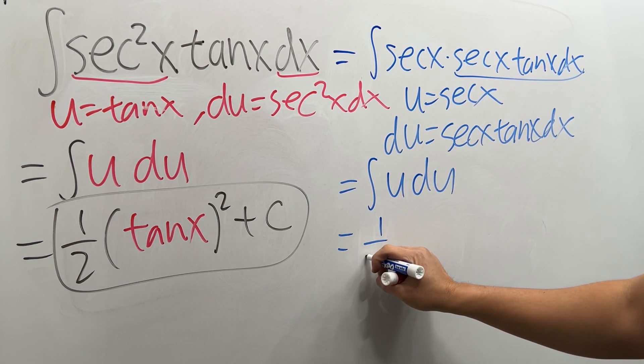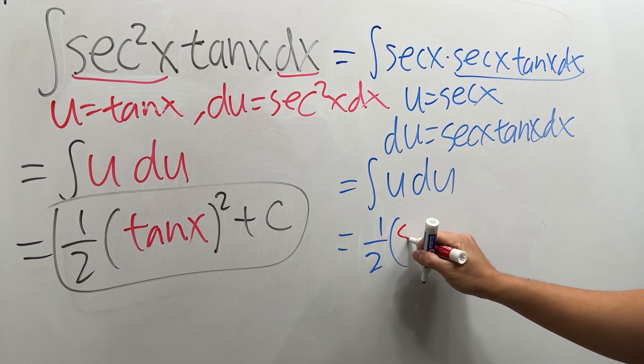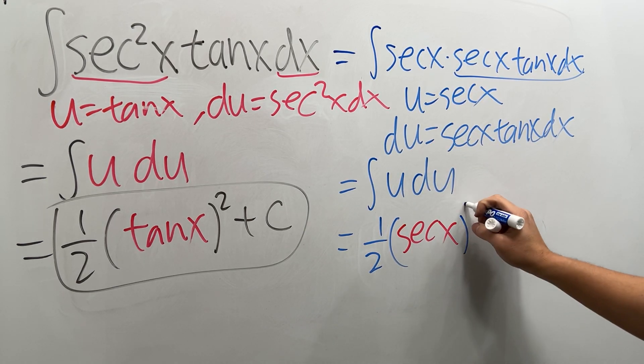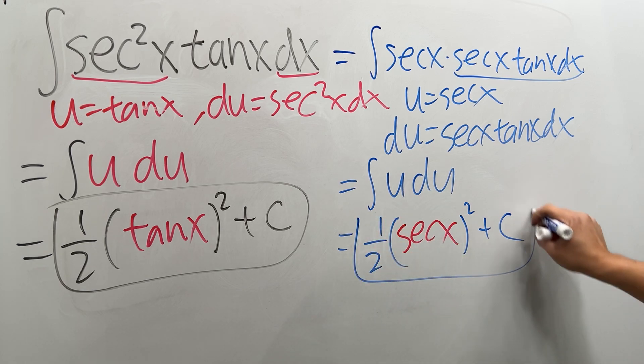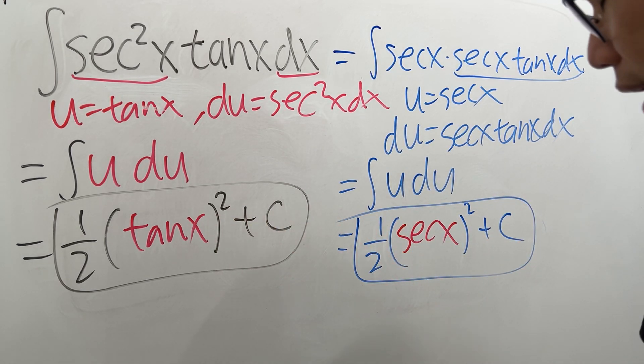So if you integrate this, we get 1 half, and then the u in this case is secant x, and then to the second power plus c. Hmm, so which one is correct, or are they both correct?